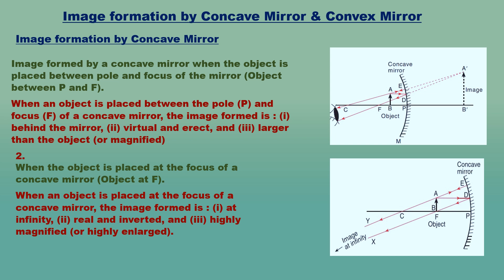Case 2: when the object is placed at the focus F of a concave mirror. The parallel ray AD gets reflected through focus F giving reflected ray DX. A second ray through center of curvature C is reflected back giving ray EY. The reflected rays DX and EY are parallel to one another and will intersect at a very far-off distance. When an object is placed at focus F, the image formed is: at infinity, real and inverted, and highly magnified.